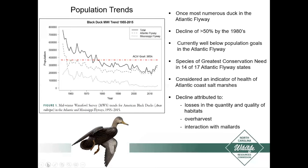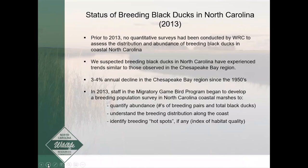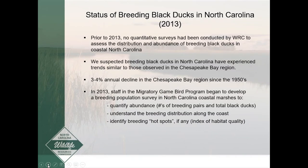Prior to 2013, WRC had never implemented a quantitative survey to assess the distribution and abundance of breeding black ducks in coastal North Carolina. We suspected our breeding black ducks experienced declining trends similar to those in the Chesapeake Bay. To address this shortcoming, myself and Joe Fuller in the migratory game program began developing a breeding population survey for North Carolina coastal marshes. Our objectives were to quantify abundance in terms of numbers of breeding pairs and total breeding black ducks, understand how breeding ducks distributed themselves along the coast, and identify breeding hotspots as an index of habitat quality.